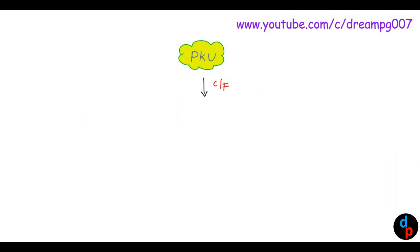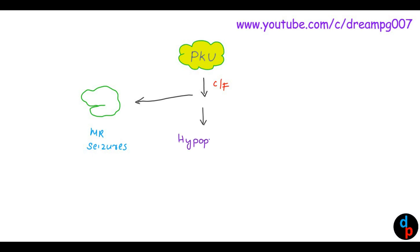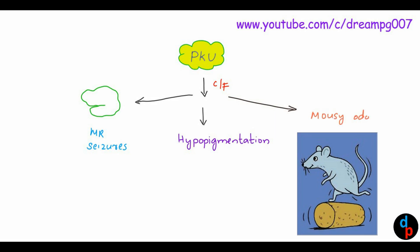Phenylketonuria is characterized by microcephaly, mental retardation, seizures, hypopigmentation in the body, and mousey odor to the urine. The mousey odor is due to the presence of phenylalanine metabolites in the urine.